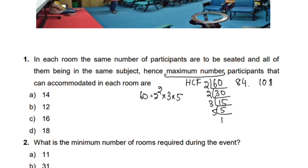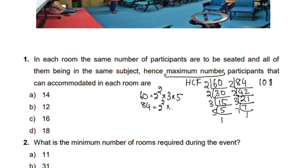Now, factorizing 60: 60 = 2 × 2 × 3 × 5 = 2² × 3 × 5 × 7. Factorizing 84: 84 = 2² × 3 × 7. Factorizing 108: 108 = 2² × 3³.